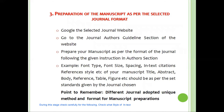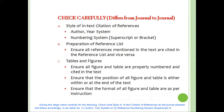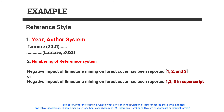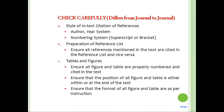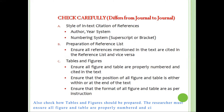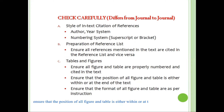During this stage, check carefully for the following: what type of in-text citation or reference system the journal adopts — it can be an author-year system or a reference numbering system in superscript or bracket format. Check what kind of reference list is adopted, ensuring all references mentioned in the text are cited in the reference list and vice versa. Also check how tables and figures should be prepared, ensuring all figures and tables are properly numbered and cited in the text, and that their position is either within or at the end of the text.